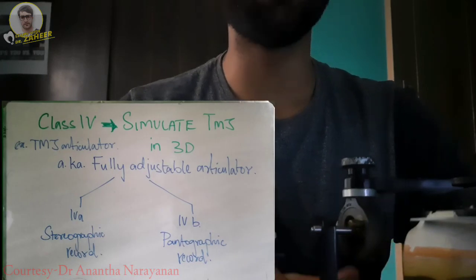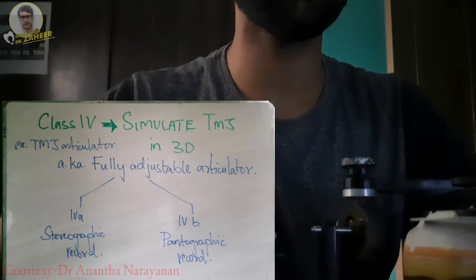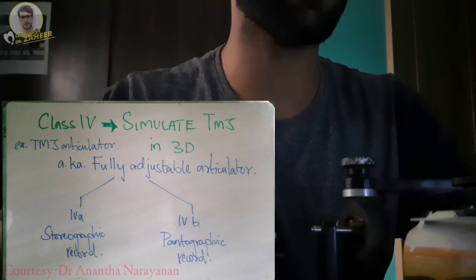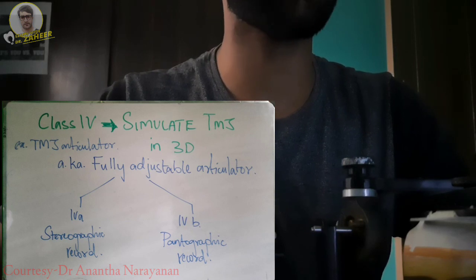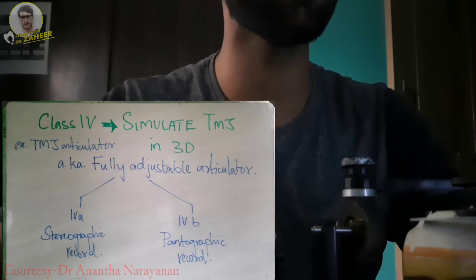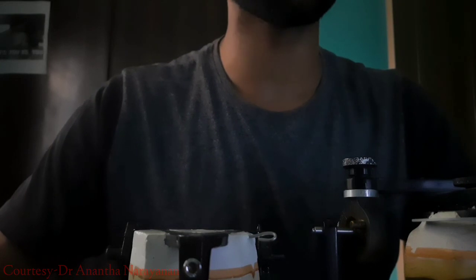Class four articulators simulate the TMJ in all three dimensions — horizontal, vertical, and the frontal plane — and are therefore called fully adjustable articulators. The condylar position can be adjusted to match the exact position of the condyle in the patient. The classic example of a class four articulator is the TMJ articulator. Class four is divided into class four A, based on stereographic records, and class four B, based on pantographic records obtained from the patient. Class four articulators also accept a face bow record.